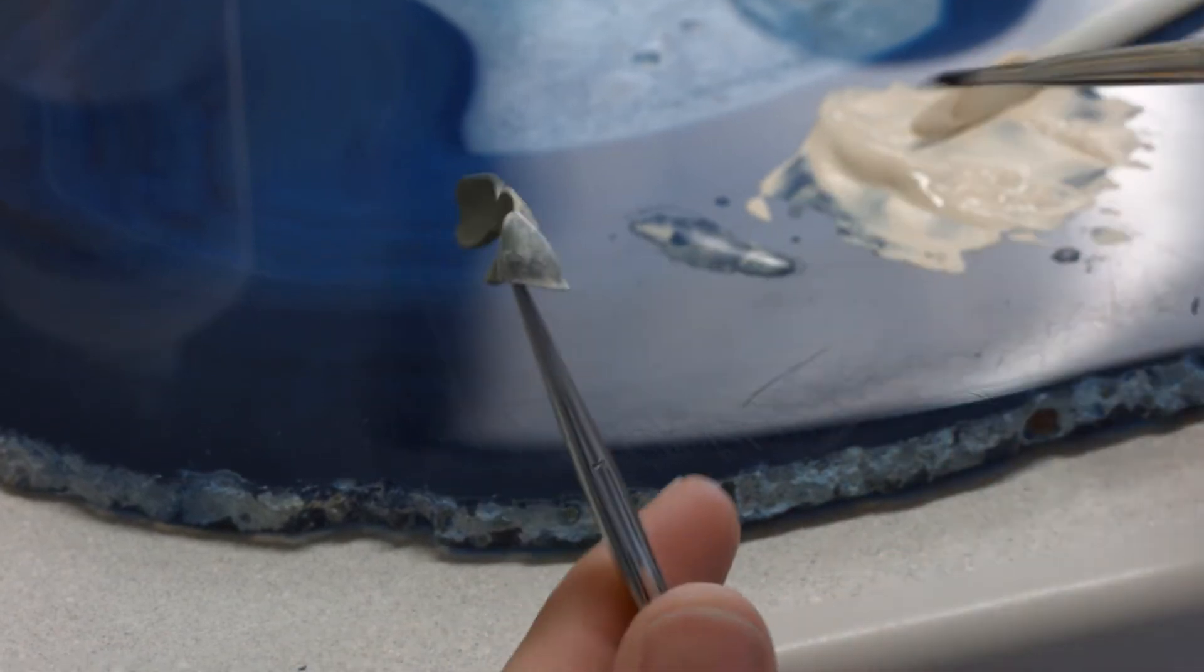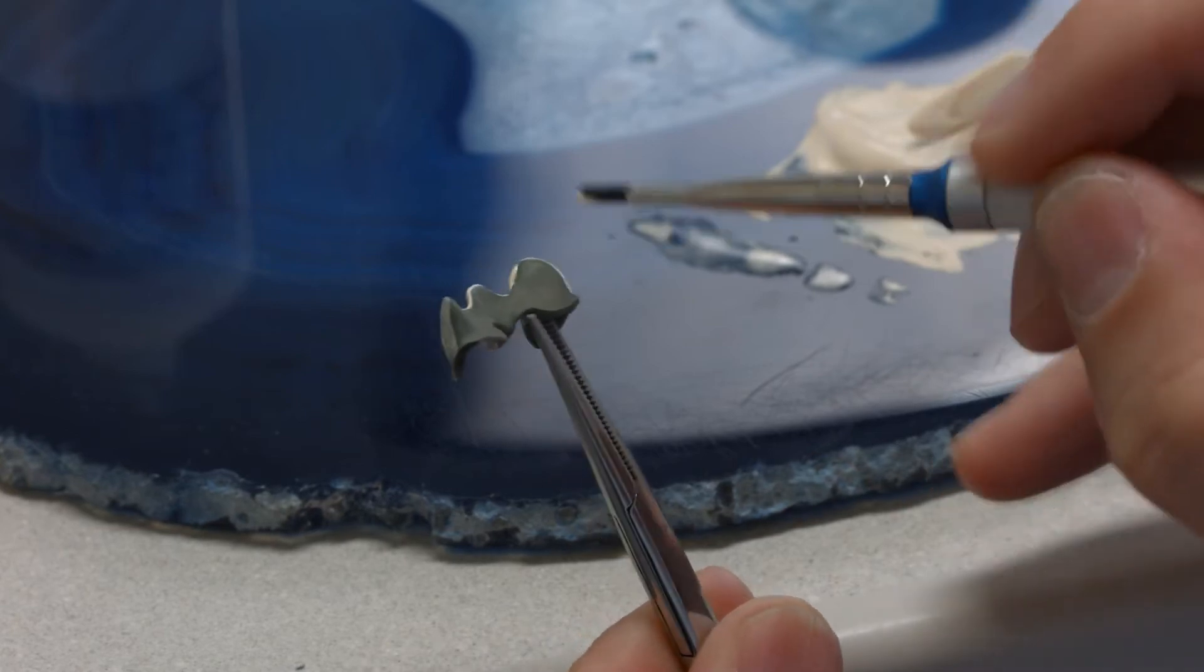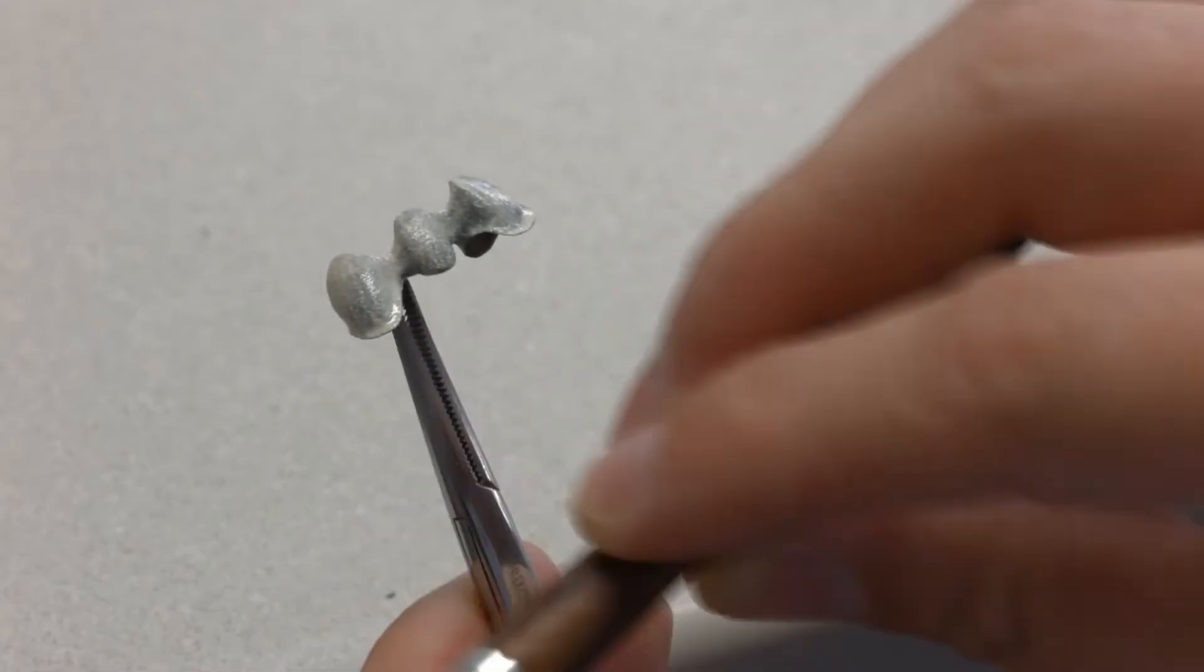Completely coating the metal with the opaquer or wash creates a sound bond between the metal and all the subsequent ceramic layers.